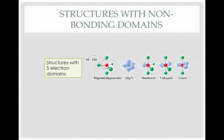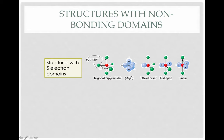Looking now at structures with five electron domains: five bonds on the central atom gives us a trigonal bipyramidal shape. However, if we have four bonds and one non-bonding pair, we get a shape called sawhorse, or seesaw. If we have three bonding pairs and two non-bonding pairs, we get a T-shaped molecule. And if we have two bonding pairs and three non-bonding pairs, we get a linear molecule. In each of these cases, the arrangement allows electrons to be as far away from each other as possible.